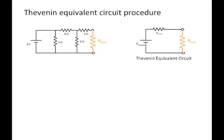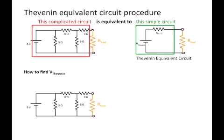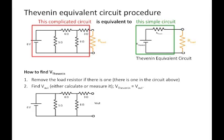So how do you find the Thevenin potential and Thevenin resistance? We've said this complicated circuit is equivalent to this simple circuit — so how do we find that out? To find V_Thevenin: first, remove the load resistor if there is one. Second, find V out — either calculate it or measure it. Then V_Thevenin is equal to V out. We remove the load resistor, hook up a voltmeter, and V_Thevenin is going to be equal to V out. We can calculate it or measure it with a voltmeter.